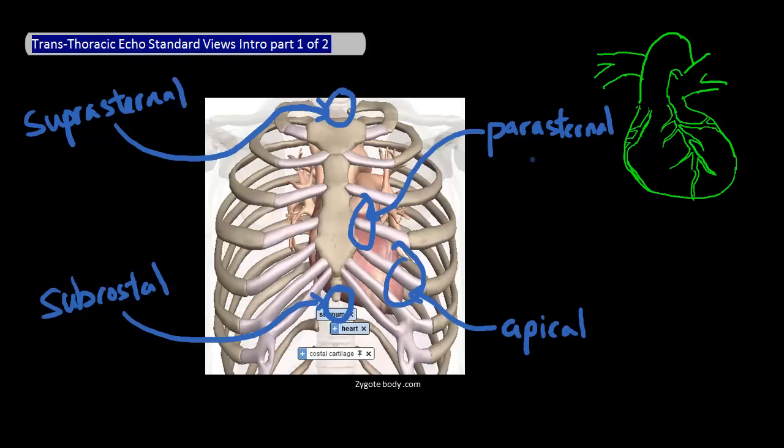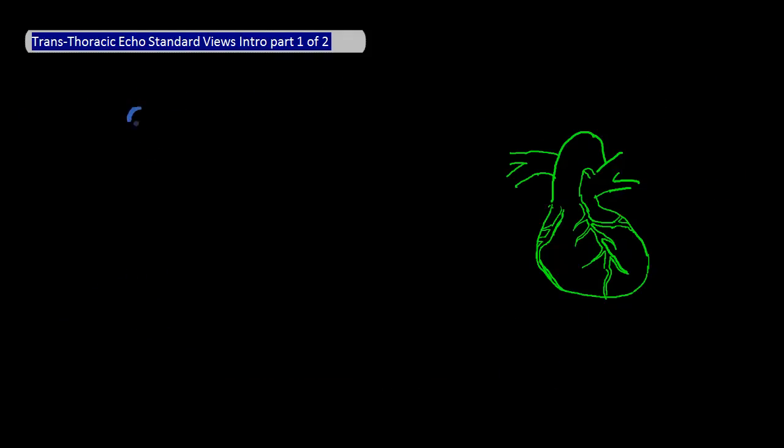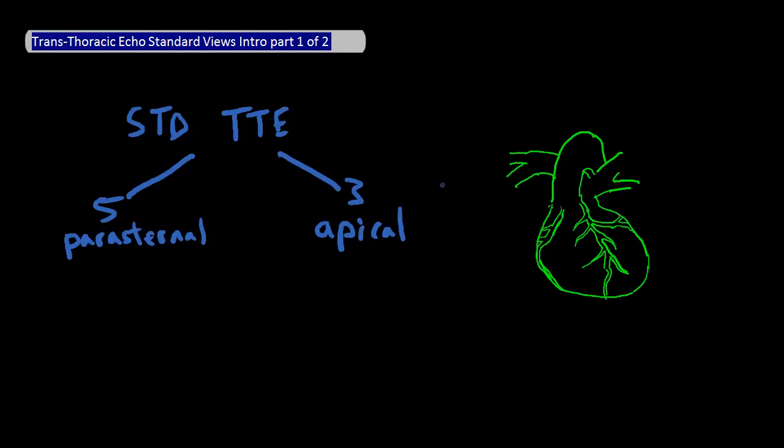For example, there are at least eight unique cuts that you can look at for both the parasternal position as well as the apical position. Now that we've done a very brief overview, let's talk about the basic standard TTE. This will include five standard cuts from the parasternal position and three standard cuts from the apical position for a total of eight standard views.